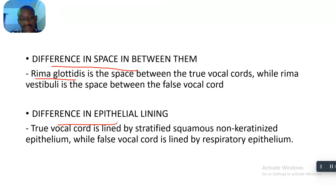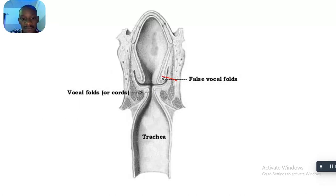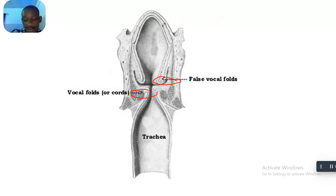The fourth difference is epithelial lining. The true vocal chords are lined by stratified squamous non-keratinized epithelium, while the false vocal chords are lined by respiratory epithelium. I would like you to grab these differences — including the difference in location in the laryngeal cavity, where the true vocal chords are lower than the false vocal chords.